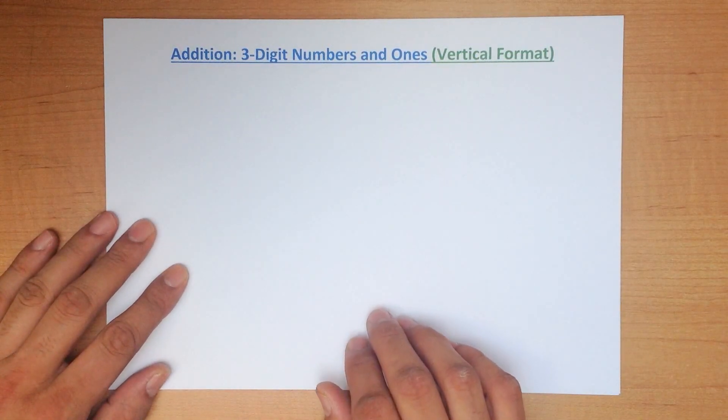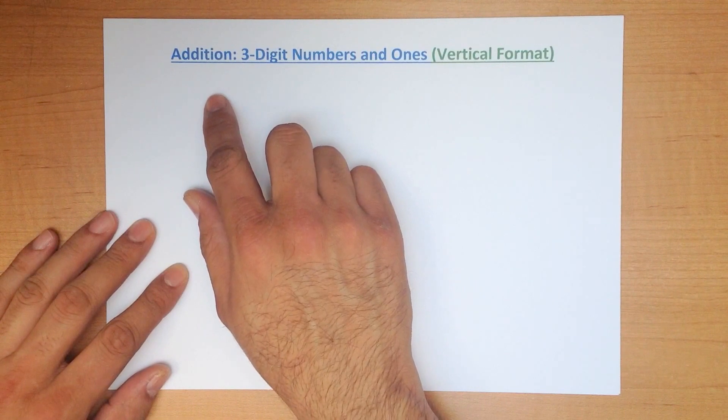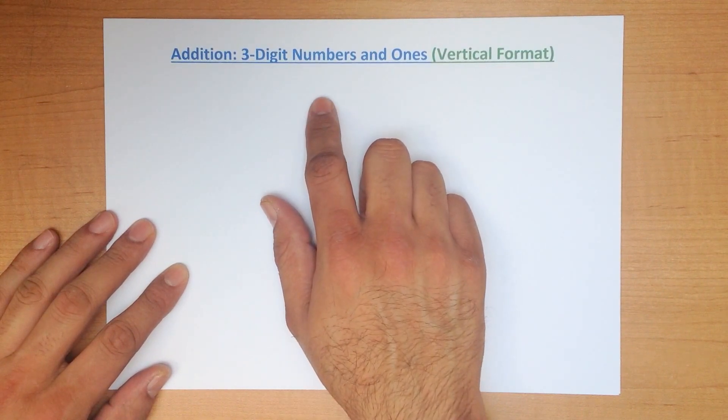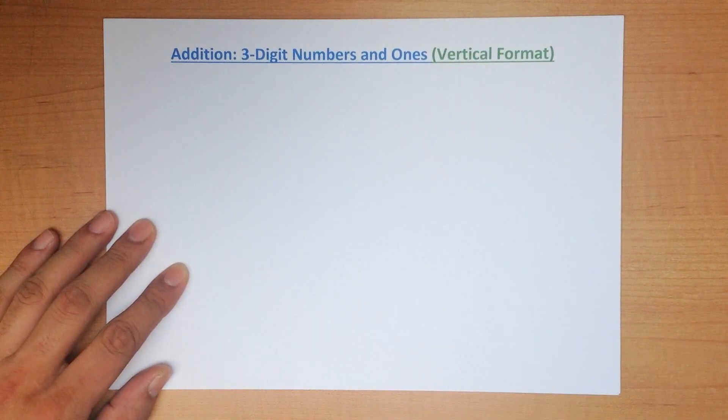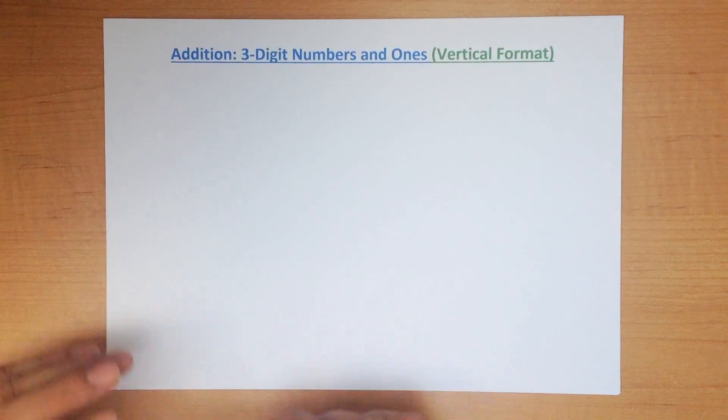In this tutorial we are going to go through the addition of three-digit numbers and ones using the vertical format. So let's start with a nice easy example.